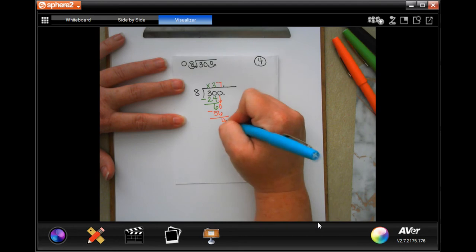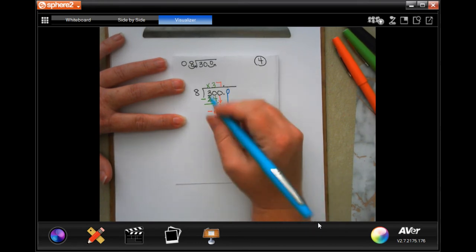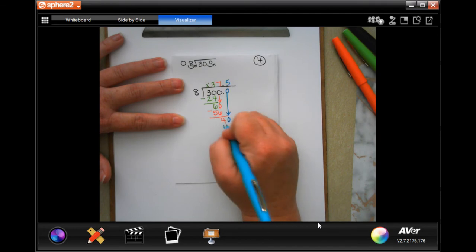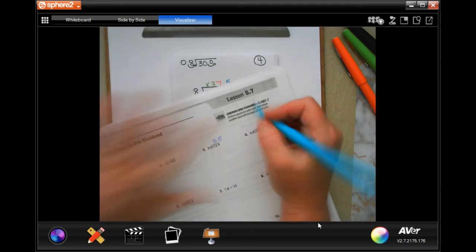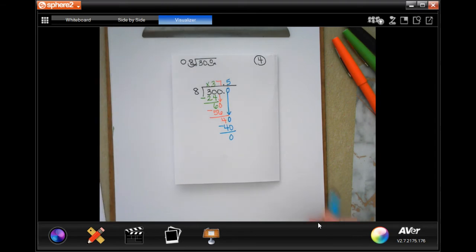Eight will go into 60 seven times. Seven times eight is 56. When I subtract, I get four. I still have a remainder, and I can't do that, so I need to add a zero and bring it down. Notice that zero is after the decimal, so I can add it. And eight goes into 40 five times. Five times eight is 40. Subtract is zero. So my answer for number four is going to be 37.5. You need to write the work down.